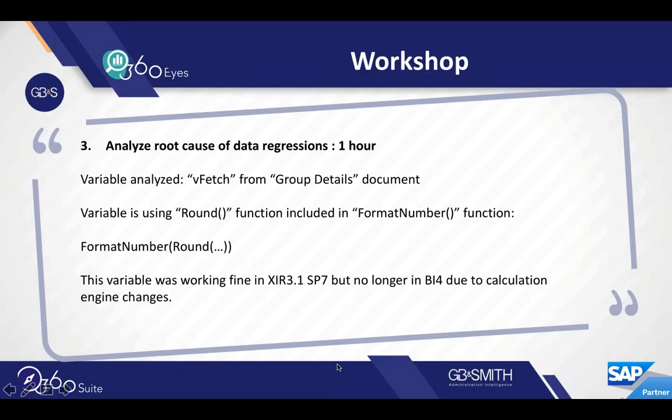They were able to analyze the root cause of those 17 data regressions — it only took them about an hour. There was a variable that was using a Round function along with a FormatNumber function. It worked fine in XIR3, but it no longer worked in BI4 due to a calculation engine change.